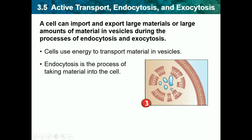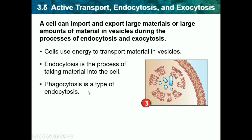The vesicle comes in through the cell membrane, and then the cell membrane breaks apart a little to let whatever came in get out and move around where it needs to go. If you can infer, exocytosis must mean exiting the materials. Phagocytosis is a type of endocytosis, which we don't really need to know right now.